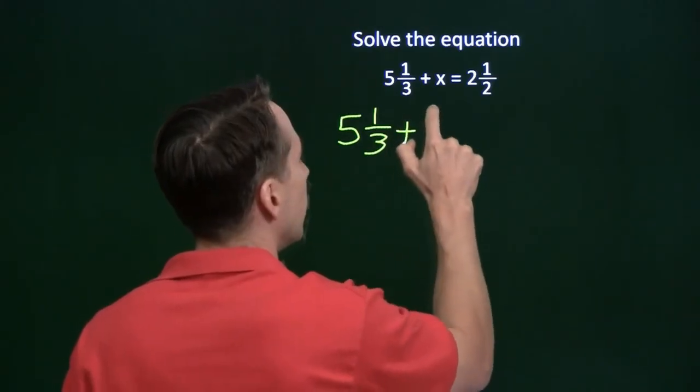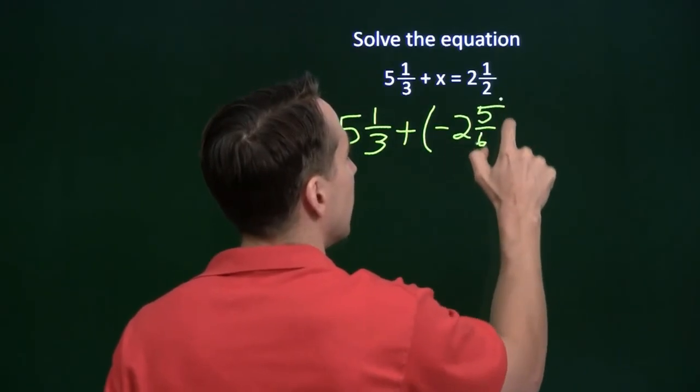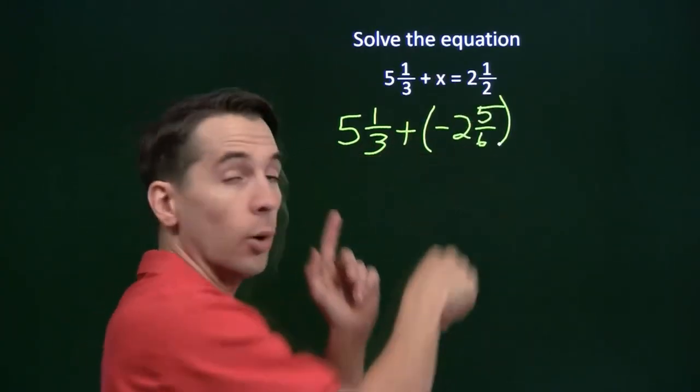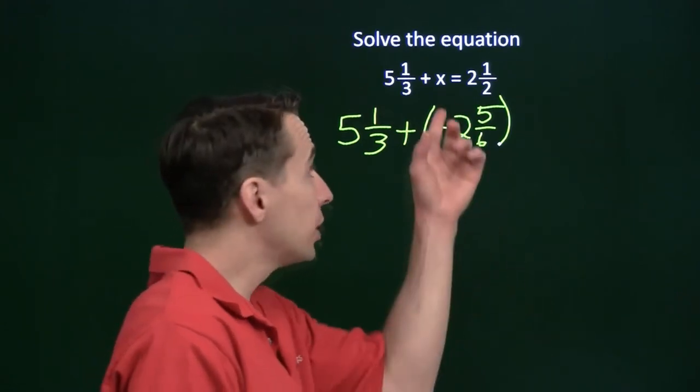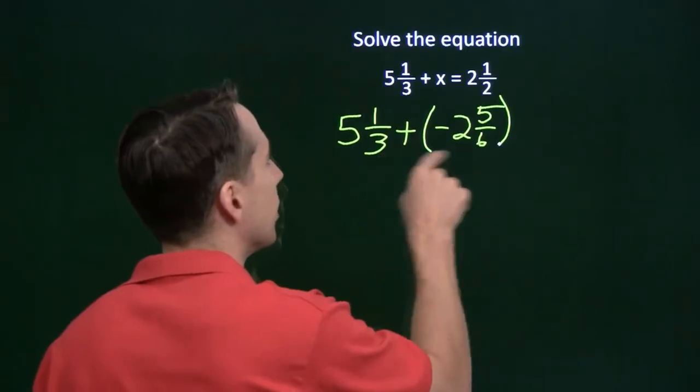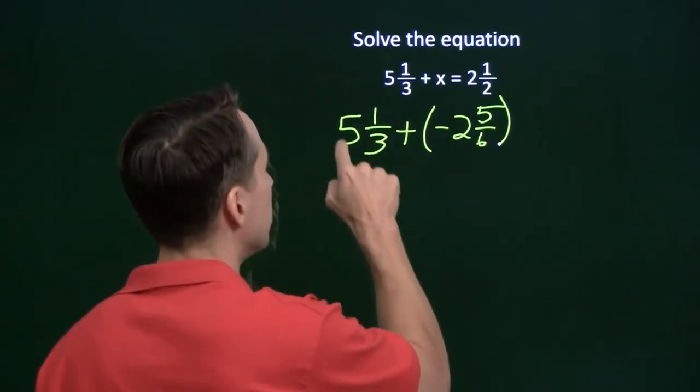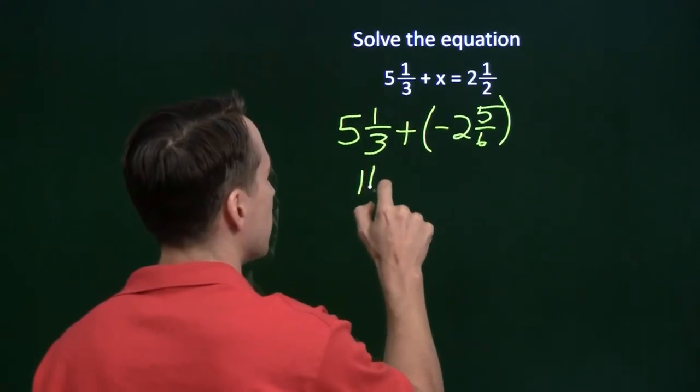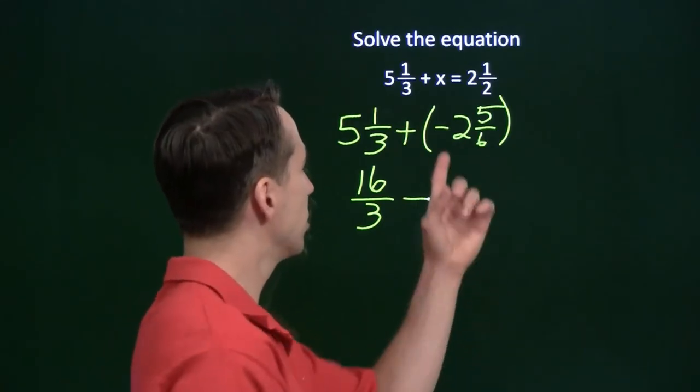So we're going to put the minus 2 and 5 sixths in for x. Stick that right in here. We're going to go ahead and add these two numbers and see if we get 2 and a half. We better get 2 and a half. If we didn't get 2 and a half, then we have to go back and start over again because we made a mistake. Let's go ahead and work this out. And again, we're going to turn these mixed numbers into fractions. Five and a third is 16 thirds. And here we're adding a negative number. That's just the same thing as subtraction.